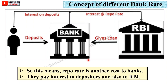From this figure you can understand the meaning of repo rate. RBI gives a loan to the bank, and in return the bank pays interest — that is called the repo rate. The bank also pays interest to its depositors. So the bank has to pay interest both to the depositors and to the RBI; the interest paid to the RBI is the repo rate.